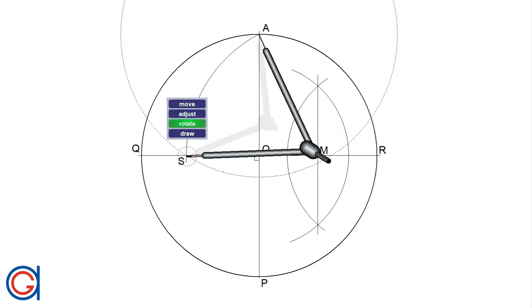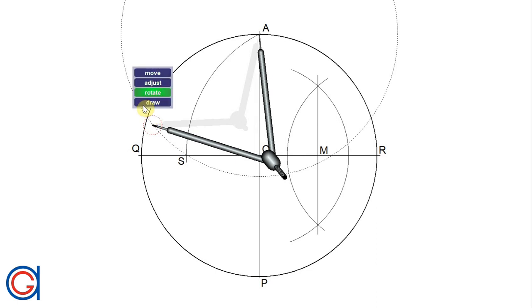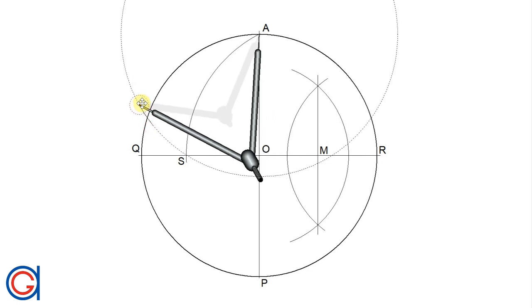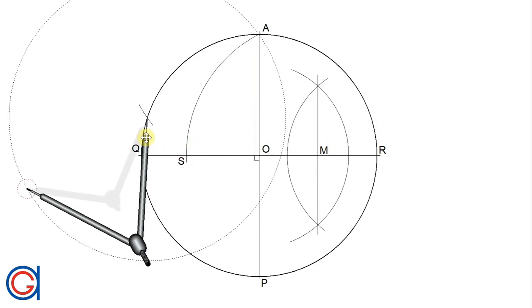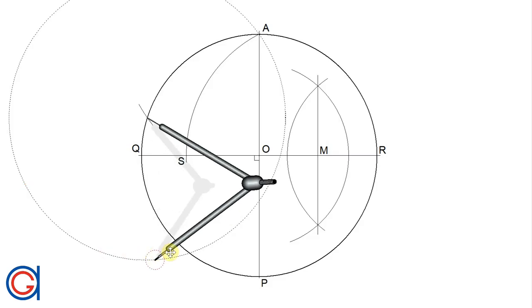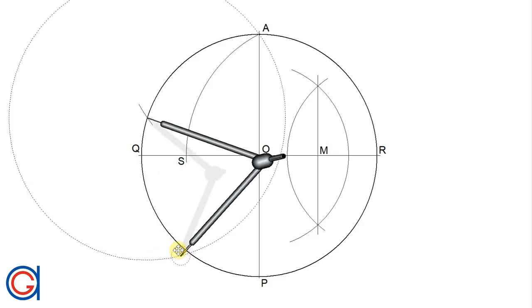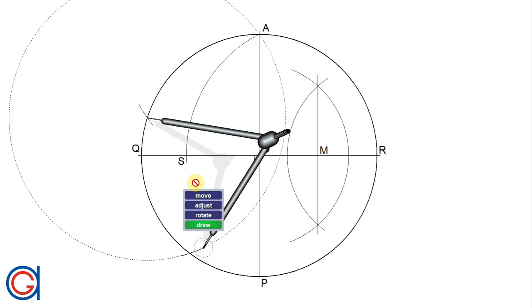With our compass set on point A and radius AS, we'll scribe an arc on the circumference, as can be seen here. Now we will continue this process five times, setting our compass on the previously scribed arc, we'll scribe a second arc as seen here.